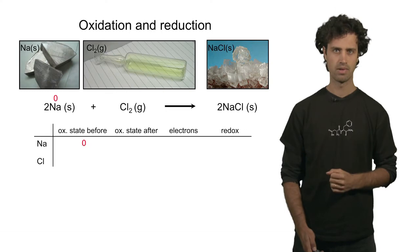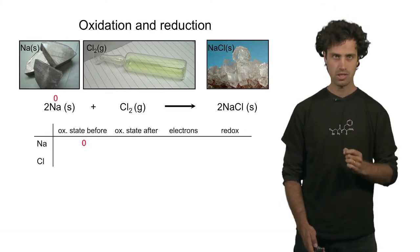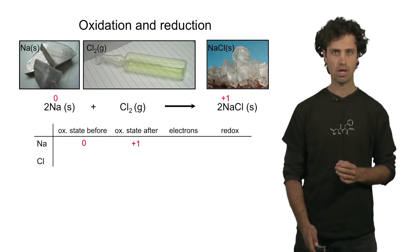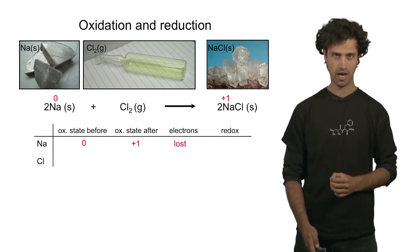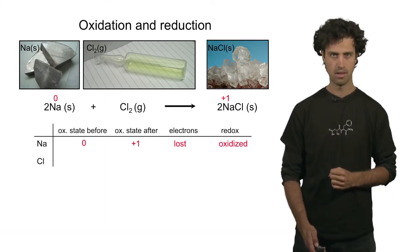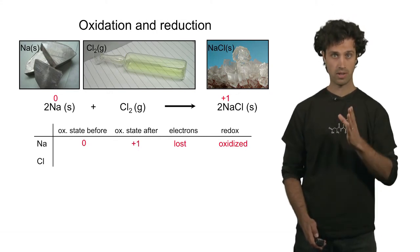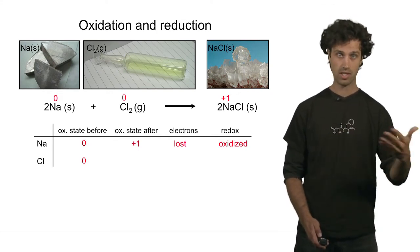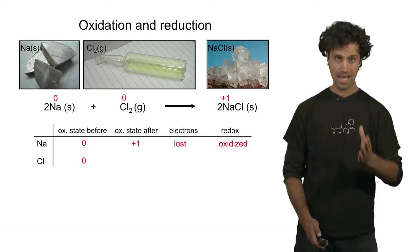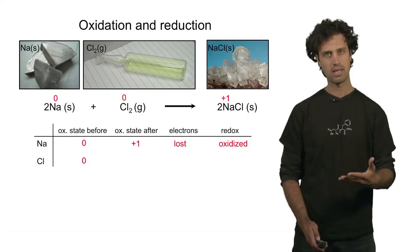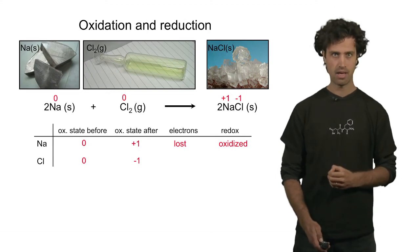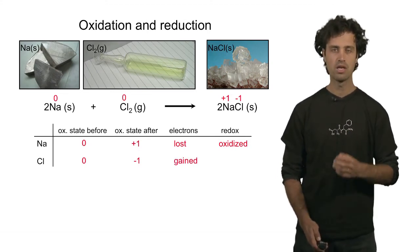After the reaction, sodium is in its ionic form and has oxidation state plus one. In this process, it has become more positive, and in doing so it has lost an electron. Therefore, sodium is oxidized in this process. Chlorine, on the other hand, also starts with oxidation state zero because it is in its elemental form before the reaction starts. After the reaction, in its ionic form, the oxidation state is minus one. We see that chlorine has become more negative — it has gained an electron and therefore it has been reduced.